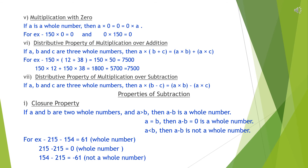Sixth property, distributive property of multiplication over addition. If a, b, and c are three whole numbers, then a multiplied by (b plus c) equals a multiplied by b plus a multiplied by c. Here, we have distributed the multiplication sign with the addition sign. For example, 150 multiplied by (12 plus 38) equals 150 multiplied by 50, which equals 7500. And 150 multiplied by 12 plus 150 multiplied by 38 equals 1800 plus 5700, which equals 7500. We get the same answer with both methods.